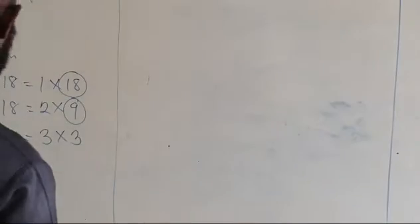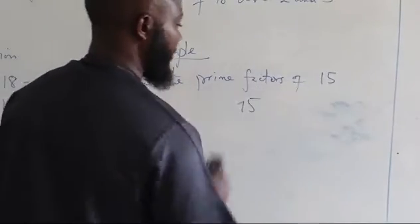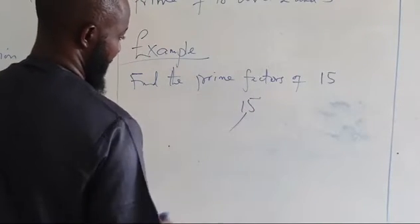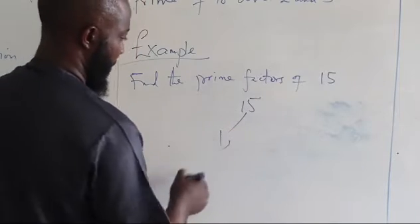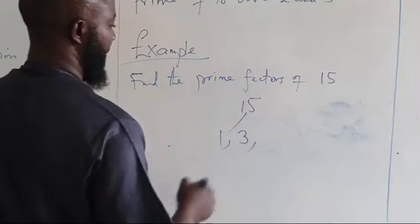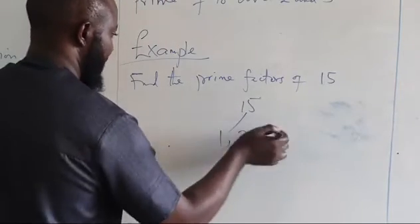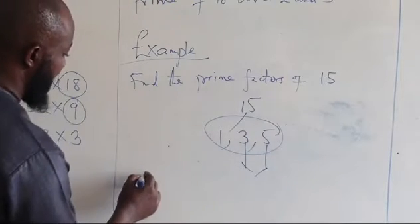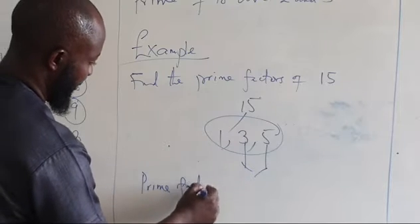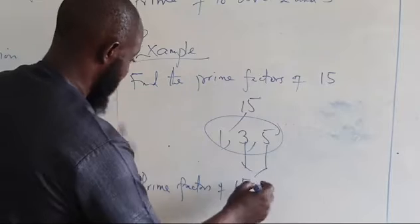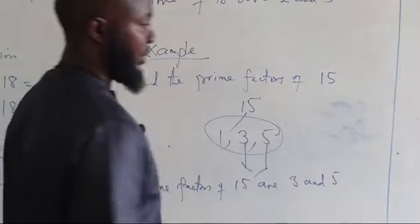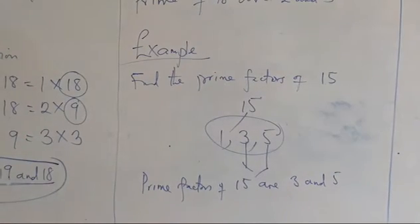Let's look at an example: find the prime factors of 15. What numbers can divide 15? 1 can divide it, 3 can divide it, and 5. Out of these, only 3 and 5 are prime numbers. Therefore, the prime factors of 15 are 3 and 5.